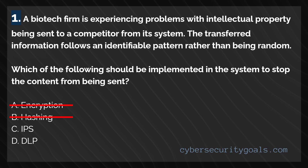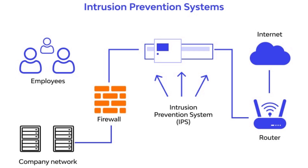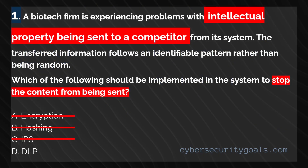IPS stands for Intrusion Prevention System. It's a tool used to automatically monitor network traffic for suspicious activity and can even prevent some attacks. Intrusion prevention systems analyze network traffic and compare it against signatures in an internal database. If the traffic matches a pattern that indicates an attack, the IPS drops the packet and blocks further traffic from the attacker's IP address or port number. An IPS can block some malicious traffic, but it isn't designed to stop the intentional transfer of sensitive information that looks like normal data. It mainly detects and blocks known network-based attack signatures and anomalies, not specific patterns of data leaks.